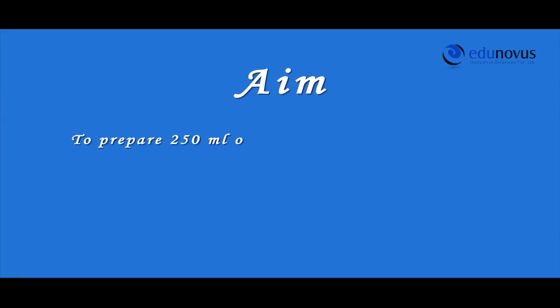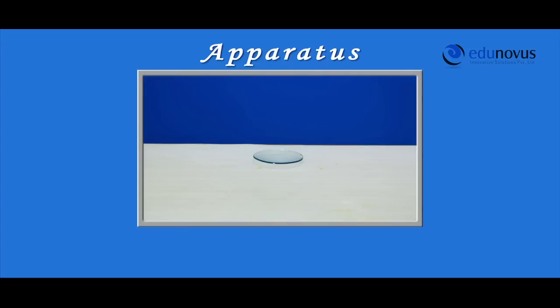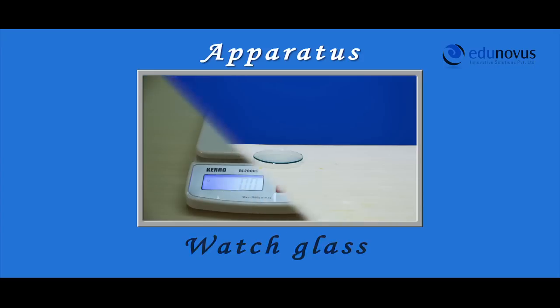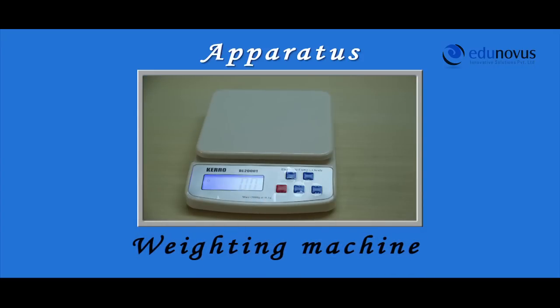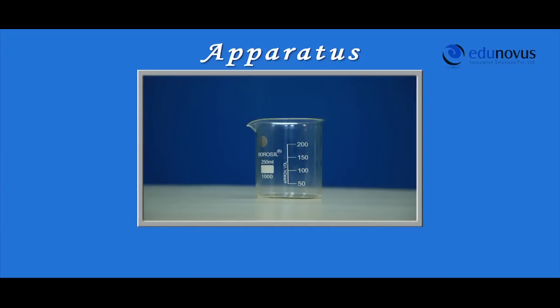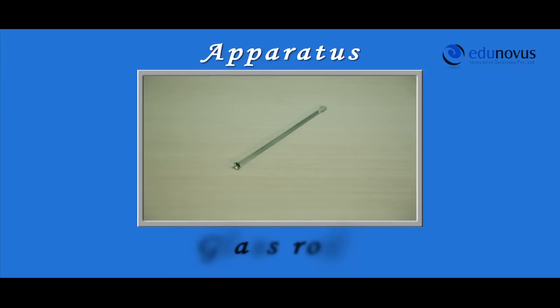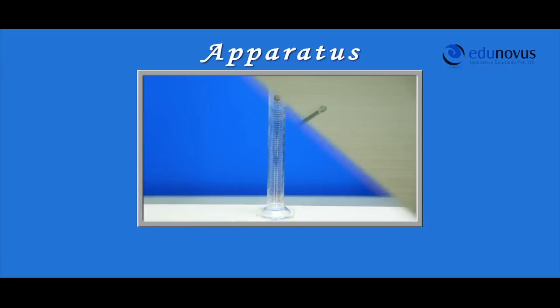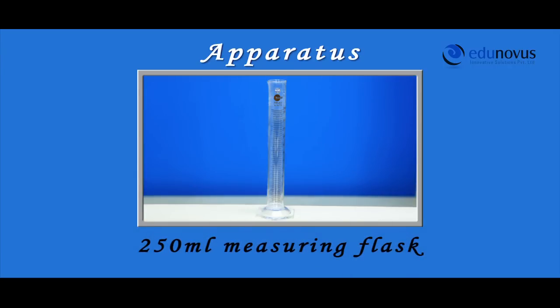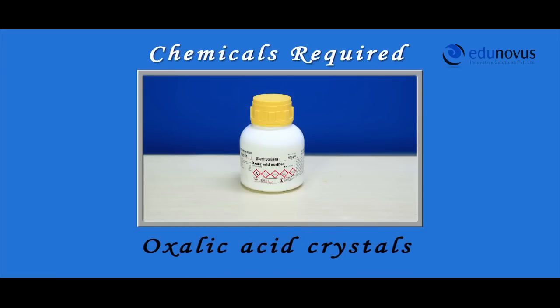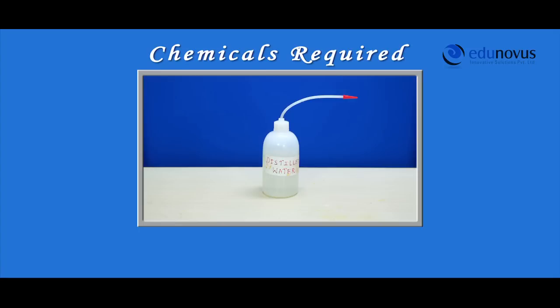To prepare 250 ml of 0.1 molarity of oxalic acid from crystalline oxalic acid, the apparatus required are: watch glass, weighing machine, 250 ml beaker, glass rod, 250 ml measuring flask. Chemicals required: oxalic acid crystals and distilled water.